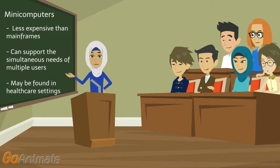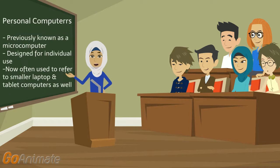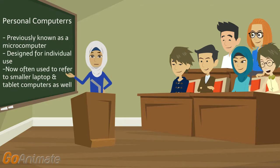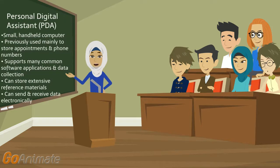The third type is the minicomputer, which is less expensive than mainframes, can support the simultaneous needs of multiple users, and may be found in healthcare settings. The fourth type is the personal computer, previously known as a microcomputer, designed for individual use, and now often used to refer to smaller laptop and tablet computers as well. The fifth type is the personal digital assistant (PDA), a small handheld computer previously used mainly to store appointments and phone numbers, but which can store extensive reference materials.